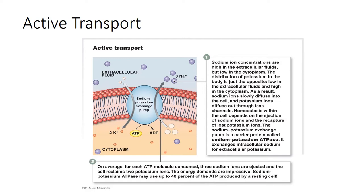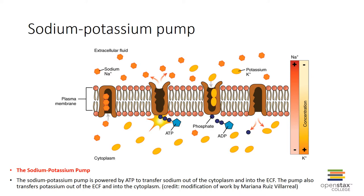The sodium-potassium pump is an example of primary active transport, located in all plasma membranes. It pumps sodium out of the cell and potassium into the cell, creating a gradient with a higher concentration of sodium outside than inside. This gradient is important because it can be used to transport other things into or out of the cell. Energy must be expended to do this.